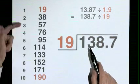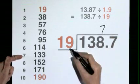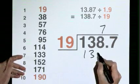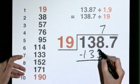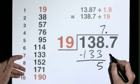19 goes into 138, 7 times. 7 nineteens are 133. Subtract to find the remainder. 5. Decimal point. Carry down the 7.